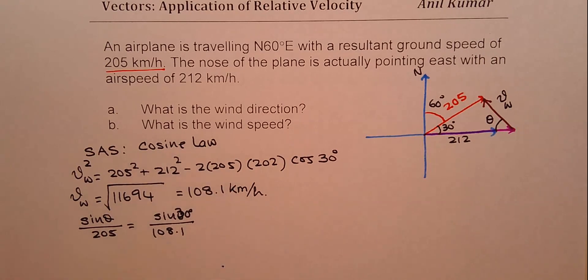So from here, we can find what theta is. So we can say theta is sine inverse of 205 times sine of 30 degrees divided by 108.1.